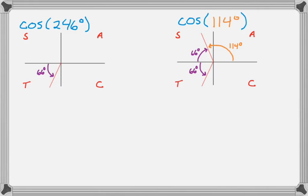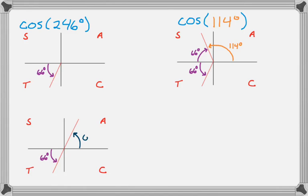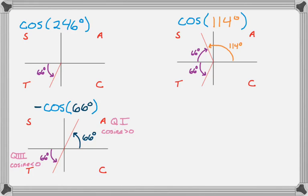Now I'm going to move into a quadrant where cosine is positive. The first two angles, 246 and 114, were both negative. Moving into the first quadrant, the angle that makes a 66-degree reference angle is just 66 degrees. Since cosine of 66° is positive and I need the result to be negative to maintain equality with cosine of 246°, I multiply by negative 1. So that gives me negative cosine of 66 degrees.